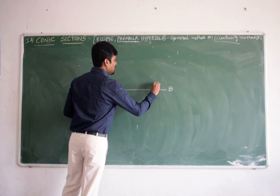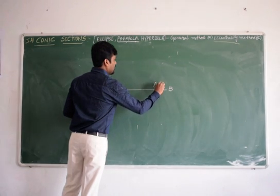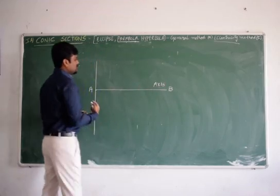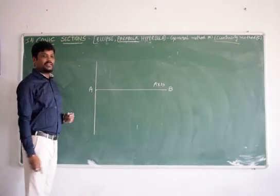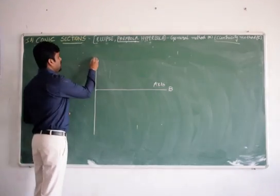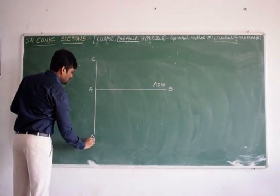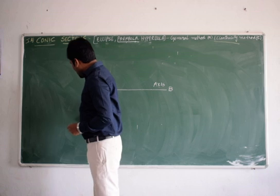In other terms it is also called as axis. Axis is a line passing from or perpendicular to the directrix. Let this be CD that is directrix.